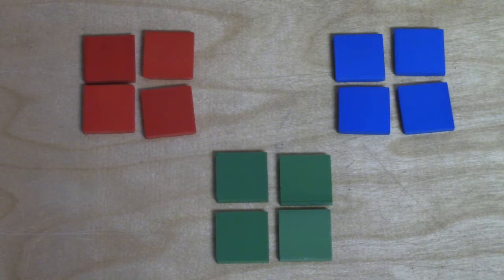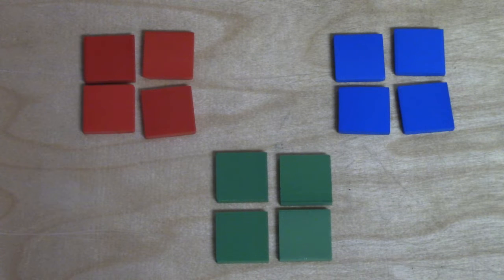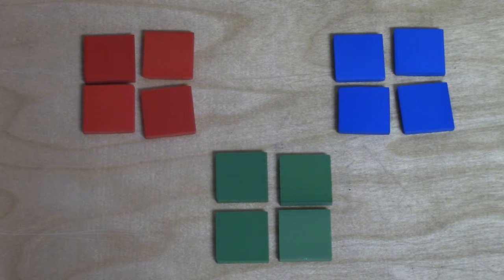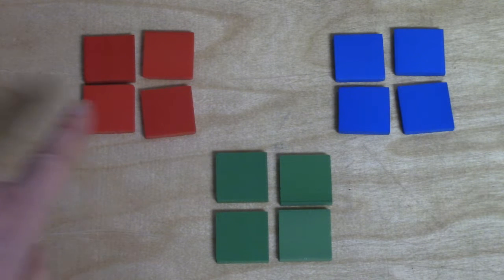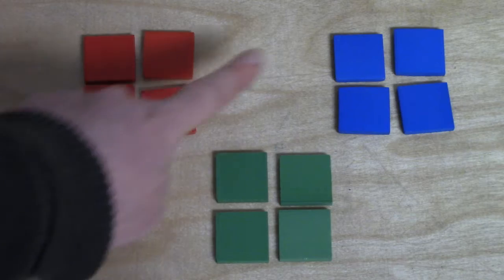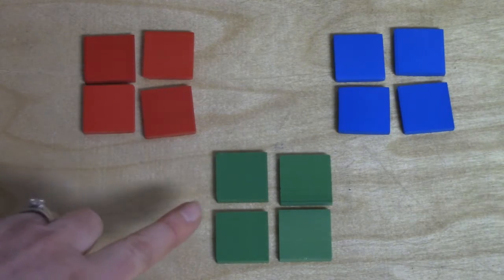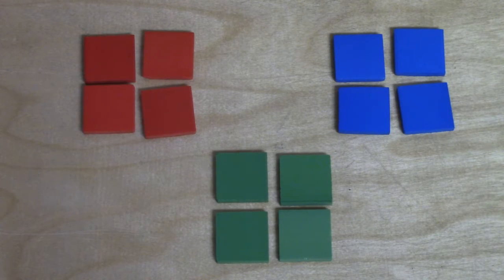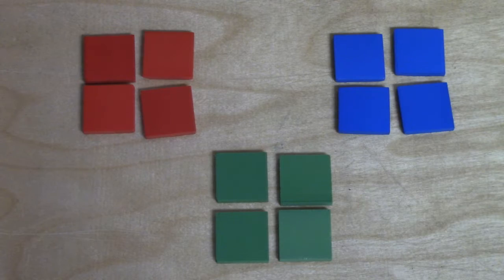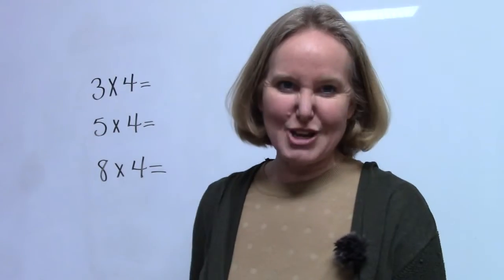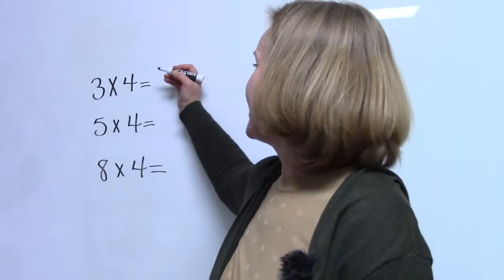How many groups of four do I have now? That's right. I have three groups of four. How many squares would be in three groups of four? Four, eight, twelve. Three groups of four equals twelve.